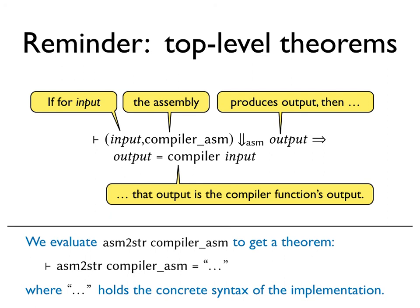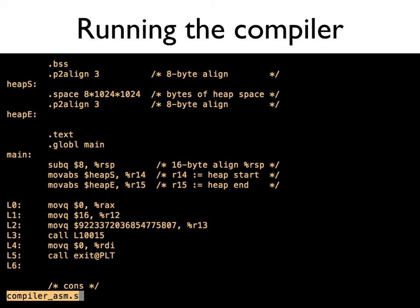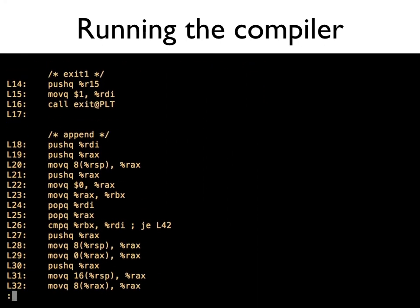When we run the compiler outside, what we actually use is the ASM to string version of COMPILER_ASM. Okay, so what is in this dot dot dot here. So let's run the compiler then. So let's first look at COMPILER_ASM in a text file. So here it is in the system as a text file.